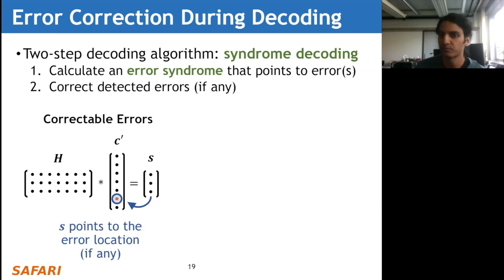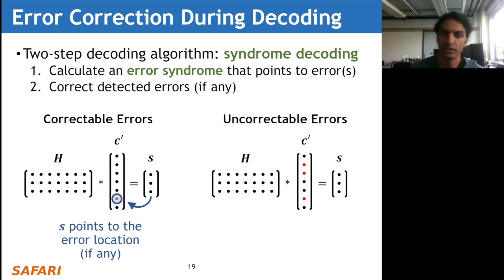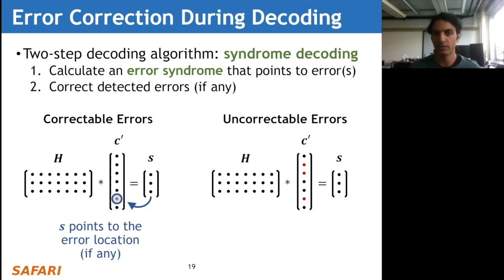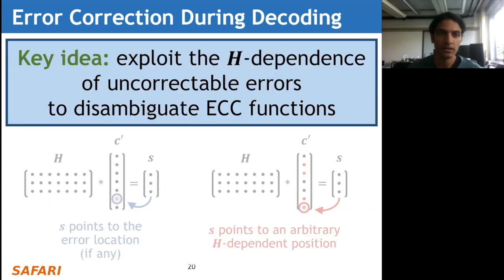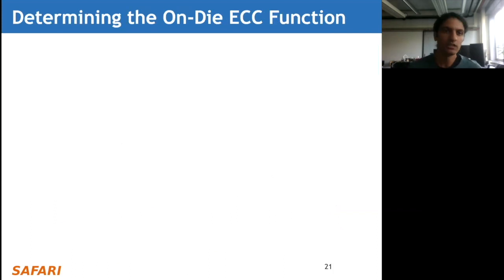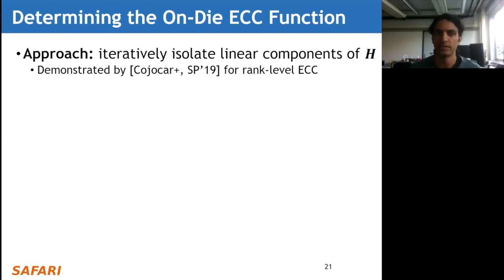The situation is quite different for uncorrectable errors. Here we show the same scenario with three bits of error. Because this is a single-error-correcting code, it cannot correct all three errors, so the syndrome computed points to an arbitrary location within the code word prime that depends on the particular parity check matrix used - essentially an H-dependent position. This is the key idea of BEER: to exploit the H-dependence of uncorrectable errors to try and disambiguate different ECC functions.